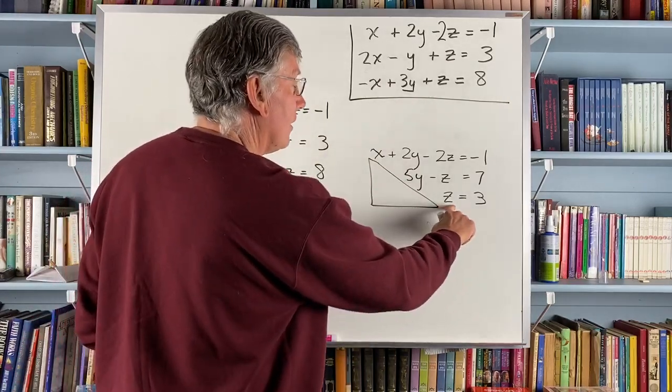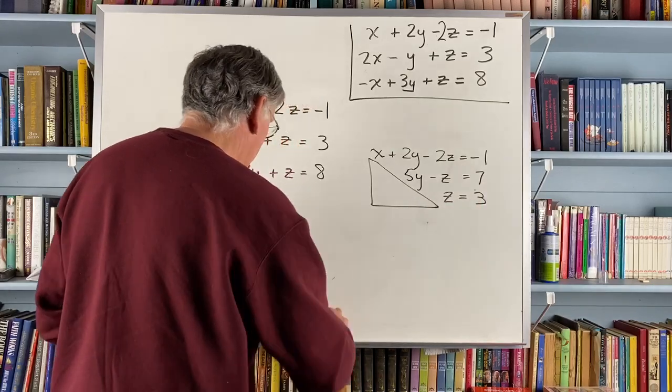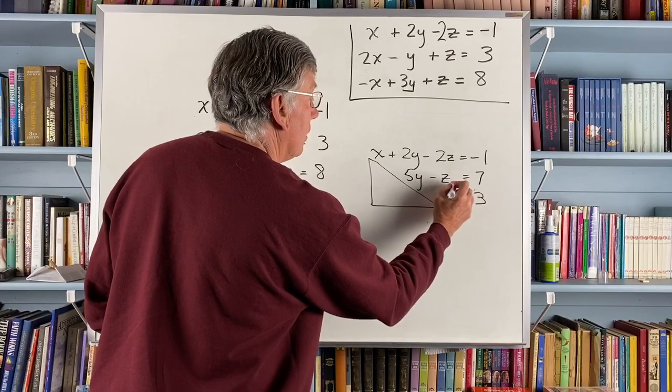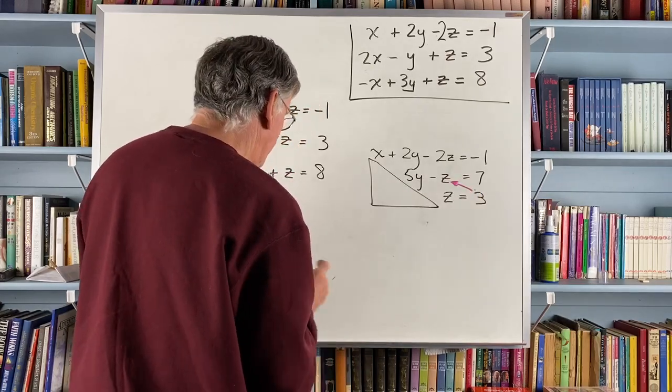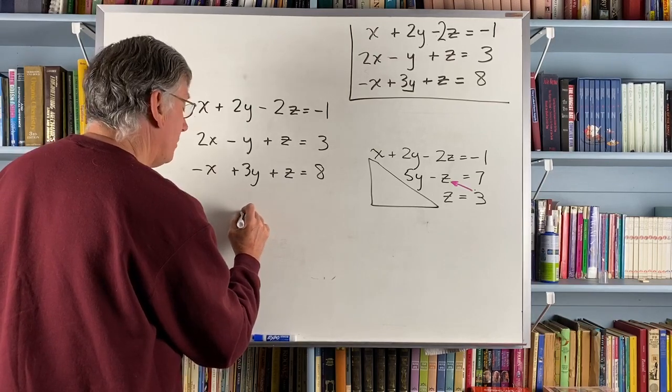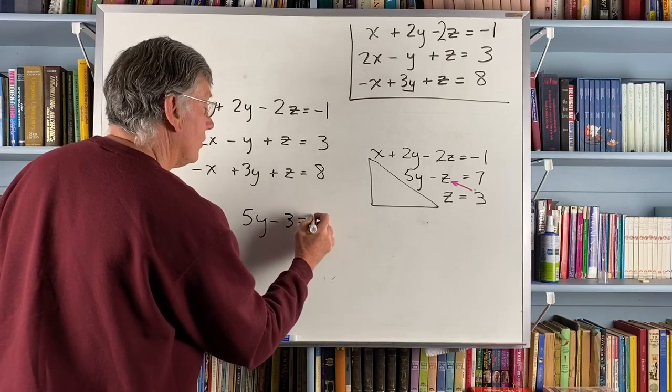Now I can take z equals 3 and plug that into, let's use a different color now. Now I can plug that into here so that 5y minus 3 is equal to 7.